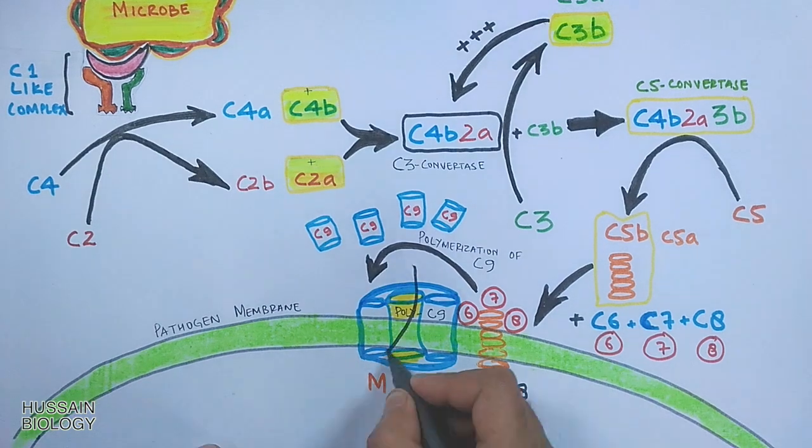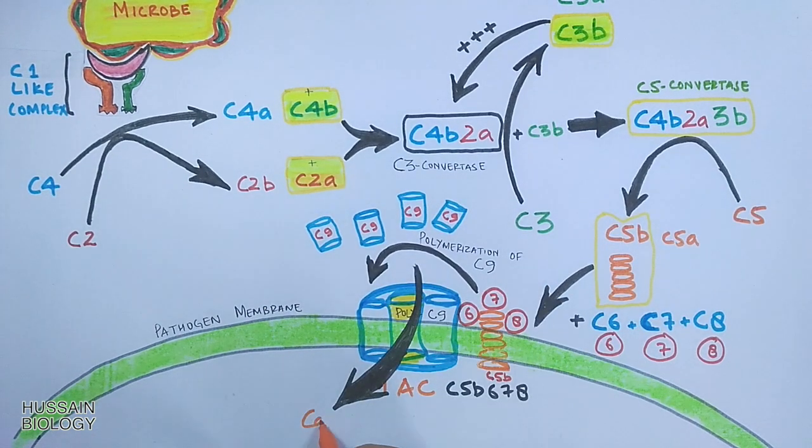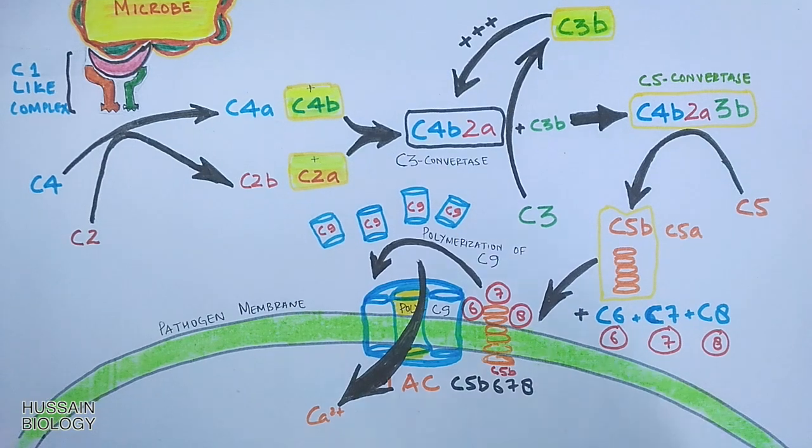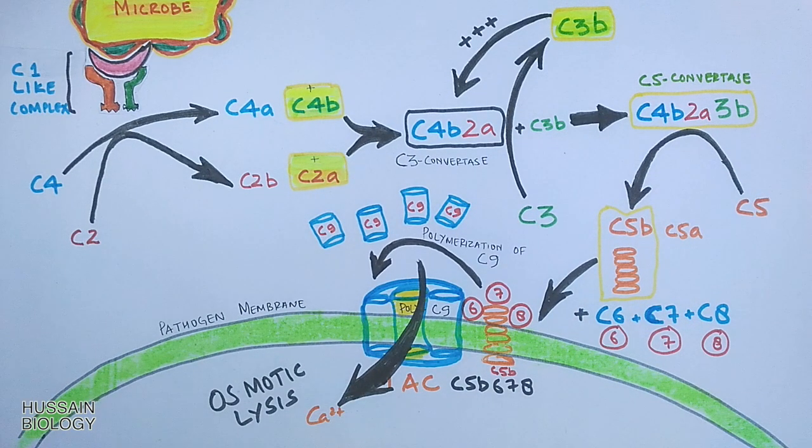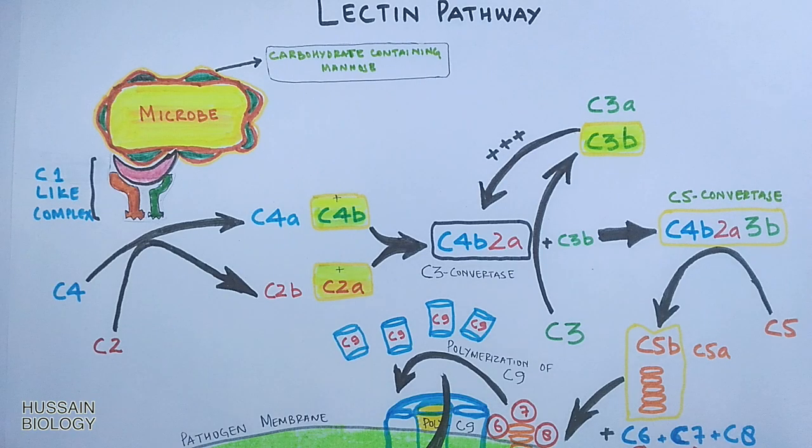Through the MAC (membrane attack complex), unregulated exchange of ions takes place, which eventually leads to osmotic lysis of pathogen cells. This is how the lectin pathway of the complement system is driven.